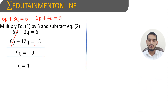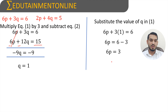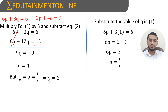Substituting q equals 1 into equation 1: 6p plus 3 times 1 equals 6, so 6p equals 3, therefore p equals 1/2. Since p equals 1/y equals 1/2, we get y equals 2. Since q equals 1/x equals 1, we get x equals 1. Therefore the solution is x equals 1 and y equals 2.